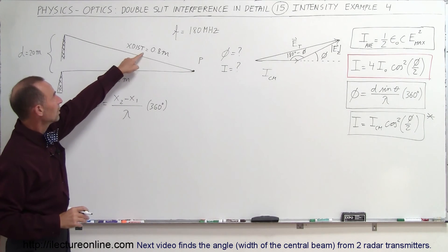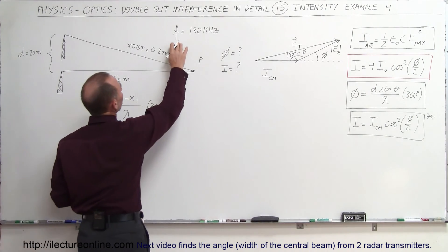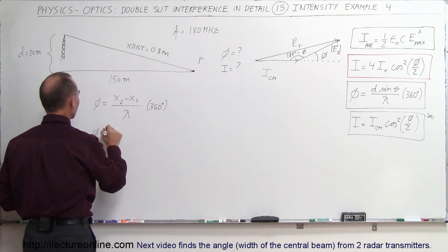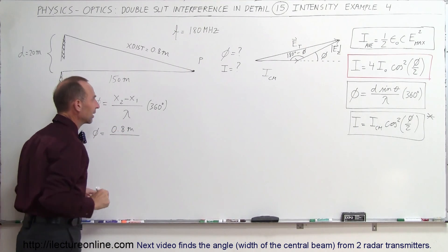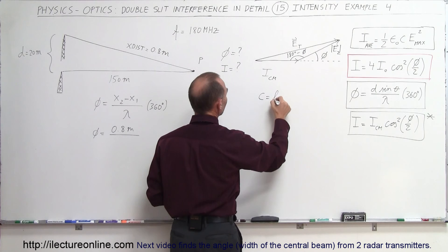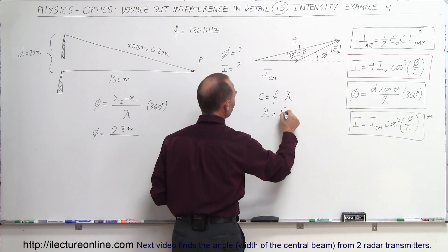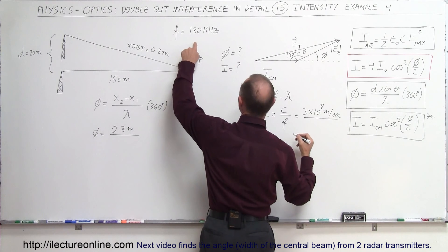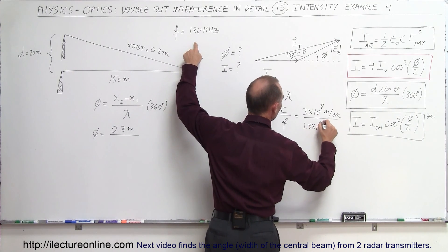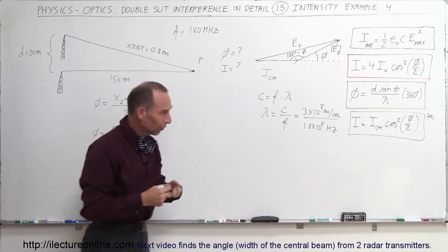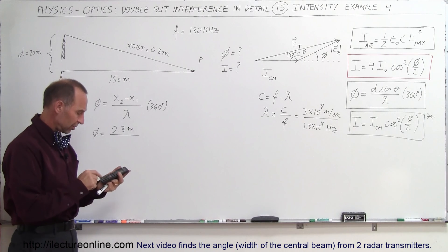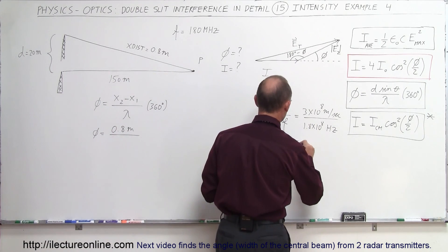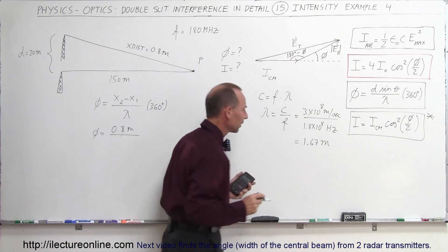The extra distance is already calculated for us. The frequency of the wave is 180 megahertz, so we have to convert that to a wavelength. The phase difference equals 0.8 meters divided by the wavelength. Since speed of light equals frequency times wavelength, the wavelength equals 3×10⁸ m/s divided by 1.8×10⁸ Hz, which gives us 1.67 meters.